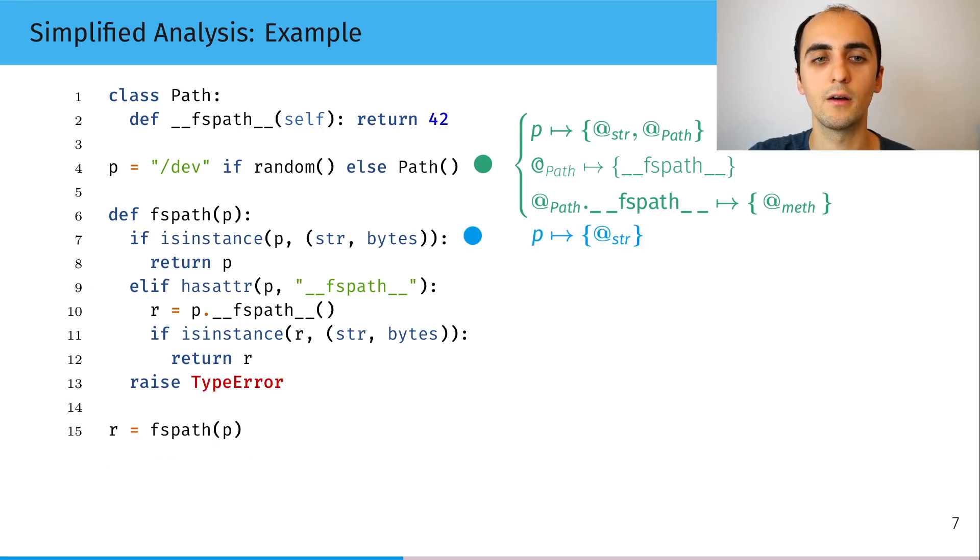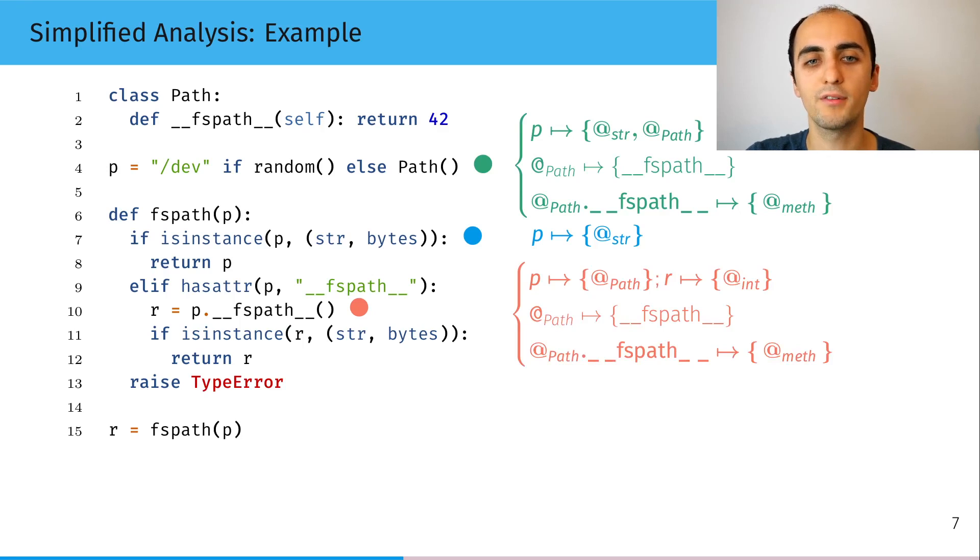we can see that at this point, p may only point to a string and at line 10, p is only a path instance. And if we inline the call to the fspath method, r will be an integer. So in the end, we'll know that either we have a type error or r points to the string from the beginning.